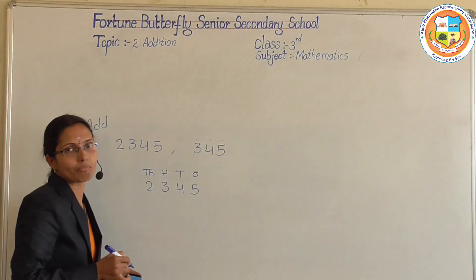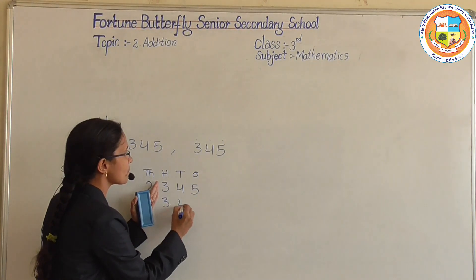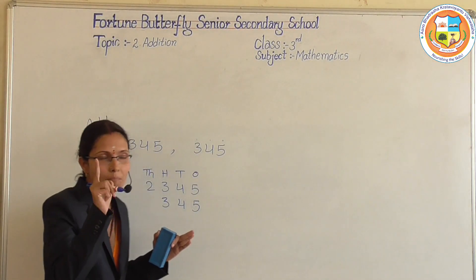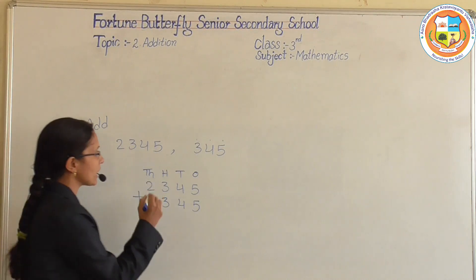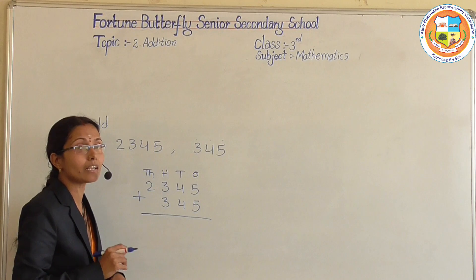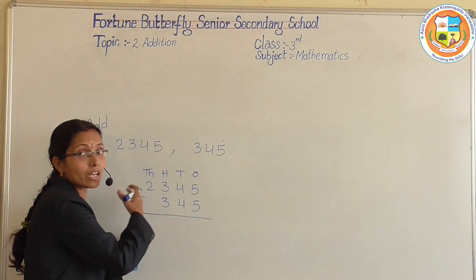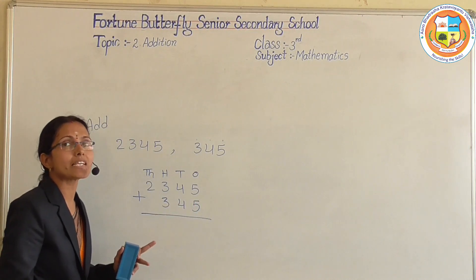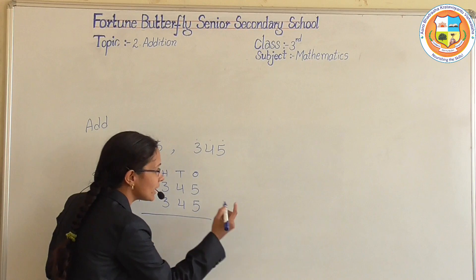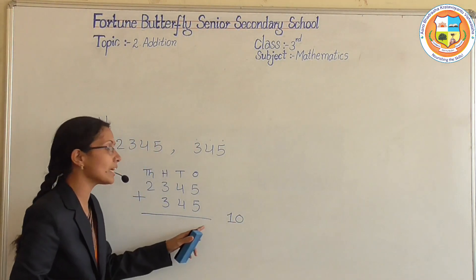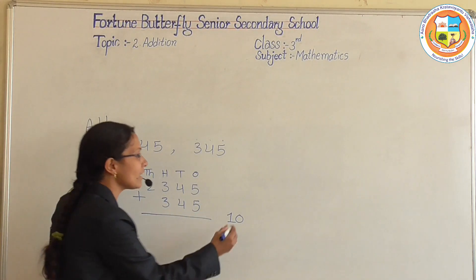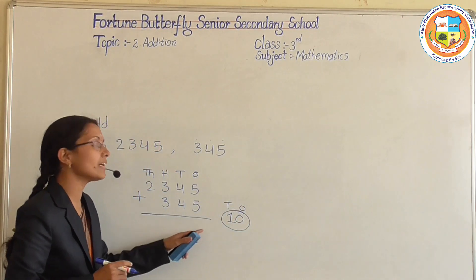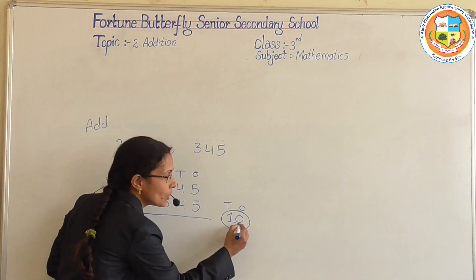We add from right to left. 5 plus 5 is 10. We cannot write 10 directly — the ones place value is 0, so we write 0 here. The 1, which is the tens place, we carry over. Now 4 plus 4 is 8, plus the carry of 1 is 9. We write 9. Then 3 plus 3 is 6. So the answer is 2690.